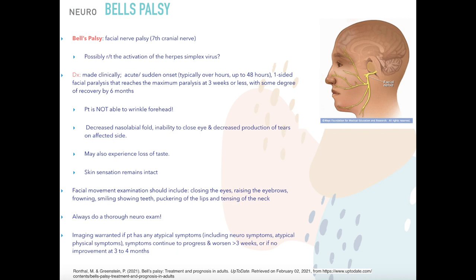Bell's palsy is a facial nerve palsy of the seventh cranial nerve, possibly related to activation or reactivation of the herpes simplex virus. Diagnosis is clinical: acute or sudden onset over hours to a maximum of 48 hours, one-sided facial paralysis reaching maximum paralysis by three weeks or less, with some degree of recovery by six months.